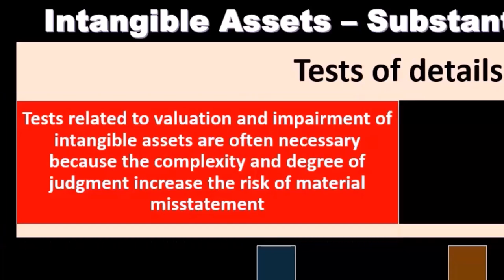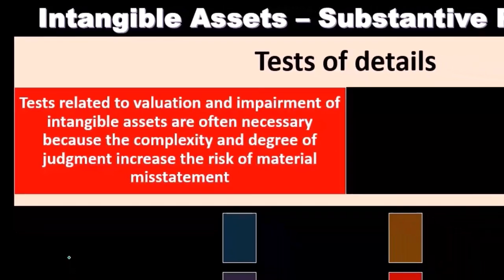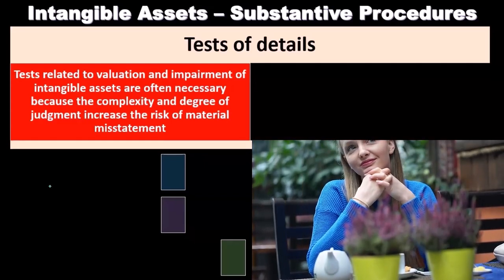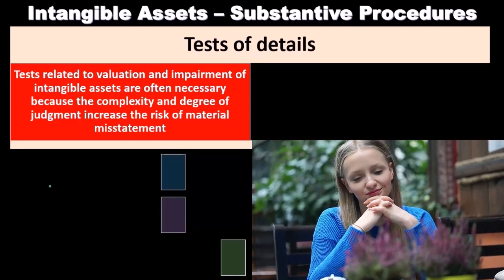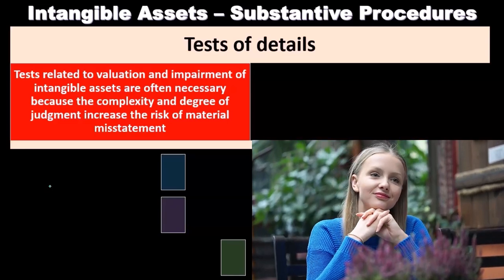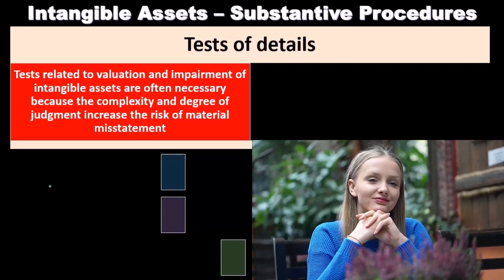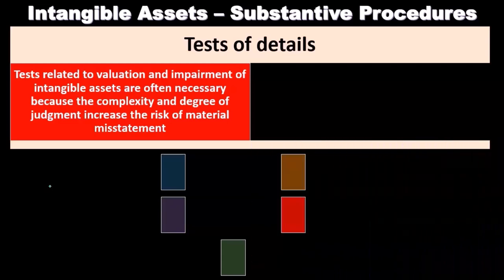We want to test basically the valuation and any type of impairment process because these intangible assets being on the books raise two questions: first, what was the valuation process when they were put on the books, and second, how would we know if they decreased in value? If you talk about something like goodwill, we're concerned with the decrease in value, and we may need specialists to determine whether there's been a problem within the valuation of intangible assets like trademarks or goodwill.